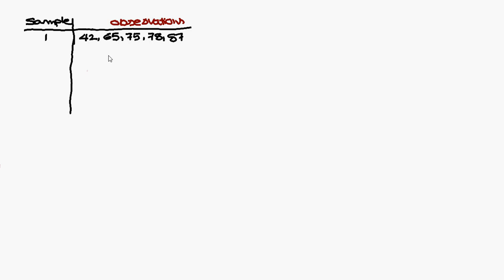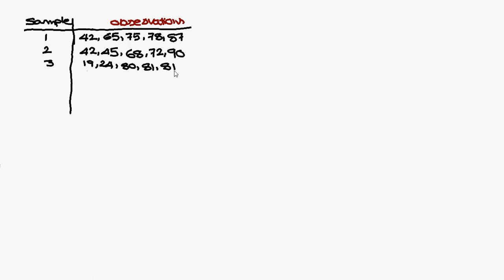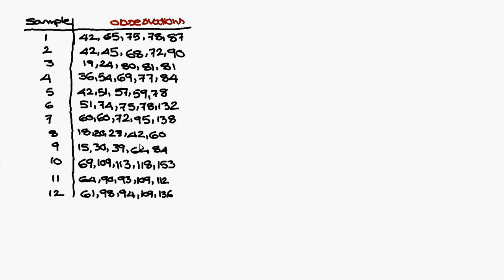To construct an X-bar chart, Mean Chart, or Range Chart, we require samples. The first sample has 5 observations: 42, 65, 75, 78, and 87. The second sample also has 5 observations, similarly the third sample. In total, we have 12 samples, each with 5 observations.